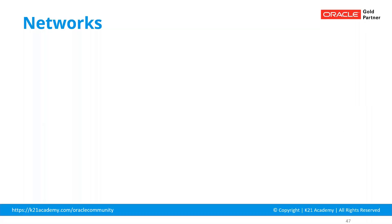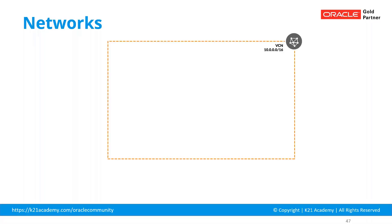In terms of network connectivity, you have a concept called VCN. If you're coming from an AWS background, it's VPC — Virtual Private Cloud. If you're coming from a Microsoft Azure background, it's a Virtual Network — VNet. VCN will give you a set of IP addresses: a continuous block of IP addresses.